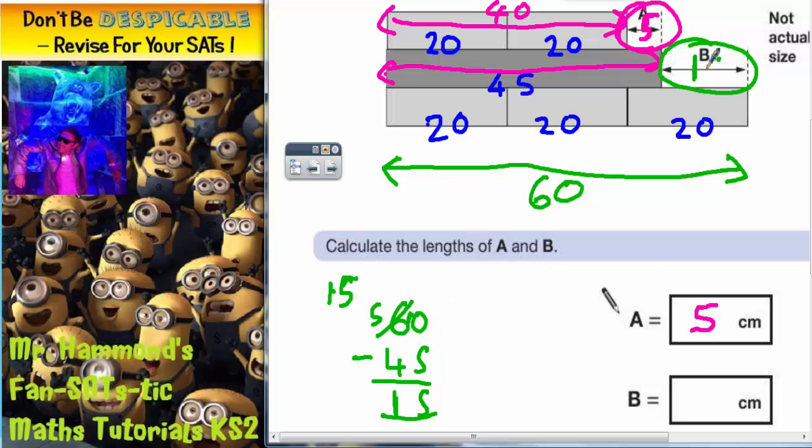So that bit has to be 15. So B, the length of B is 15. A quick double check: we're saying that A is 5, so 40 plus this 5 makes 45, so that works. And we're saying that B is 15.